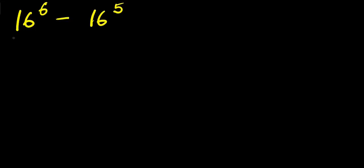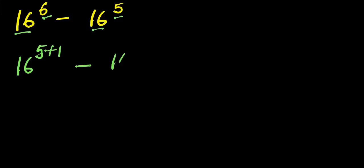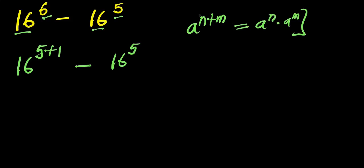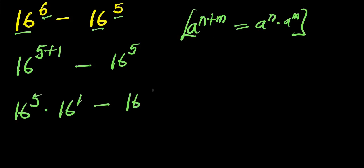How to evaluate without a calculator: 16 power 6 minus 16 power 5. We can rewrite 16 power 6 as 16 power 5 plus 1, which is the same as 16 power 5 plus 1 minus 16 power 5. We apply the rule: a power (n plus m) equals a power n times a power m, giving us 16 power 5 times 16 power 1 minus 16 power 5.